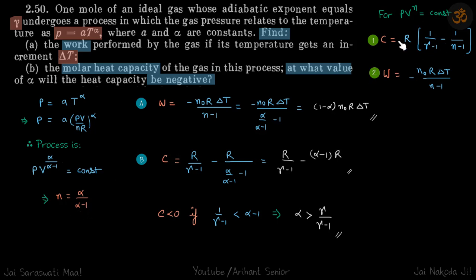Now we know that for a polytropic process, the molar heat capacity and work have specific formulas. Let's find them one by one. For work, ΔT is given to us, so we can directly arrive at our answer.